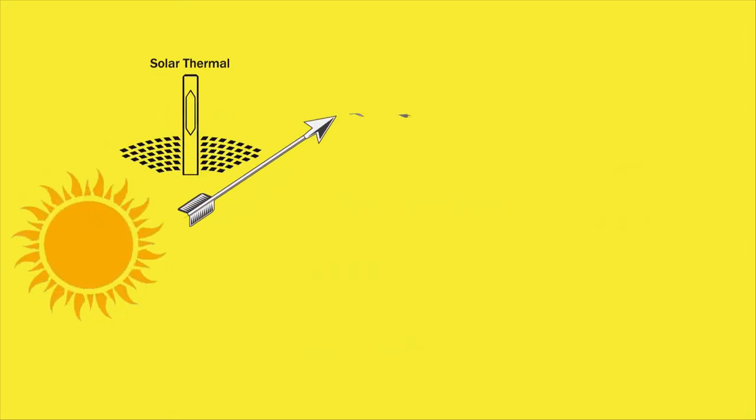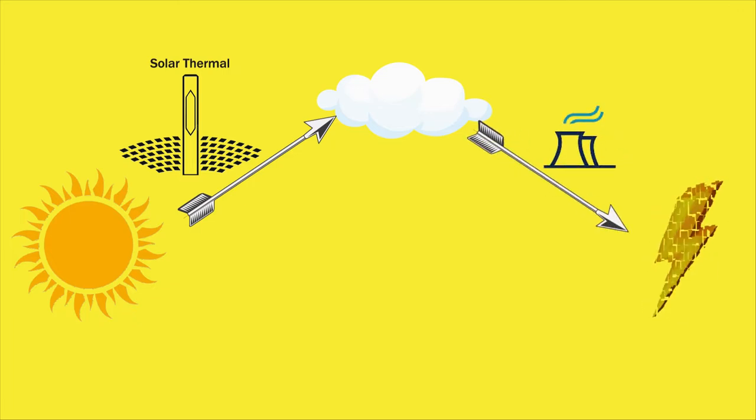In contrast, solar thermal technology converts sunlight into heat, producing vapor that flows through a steam turbine that generates electricity.